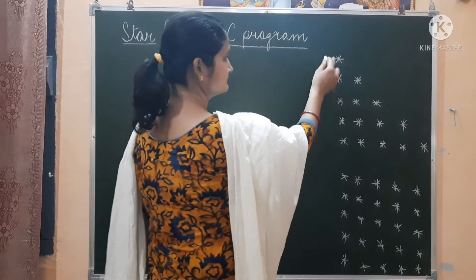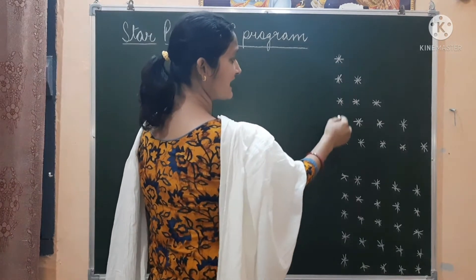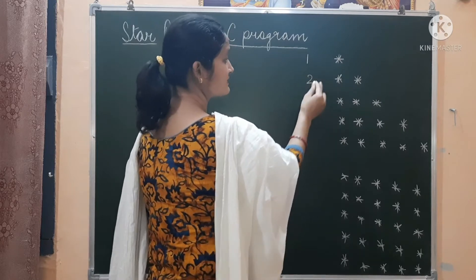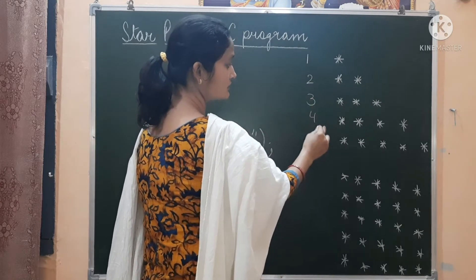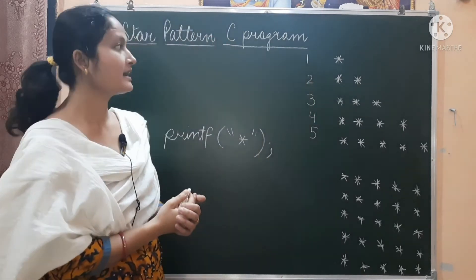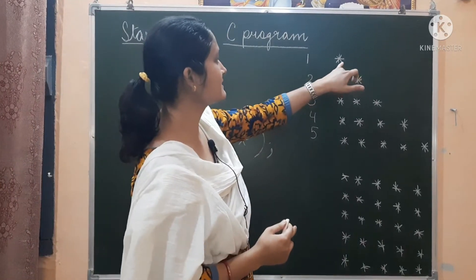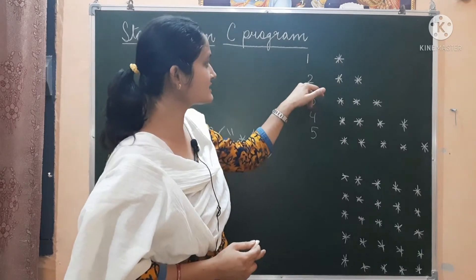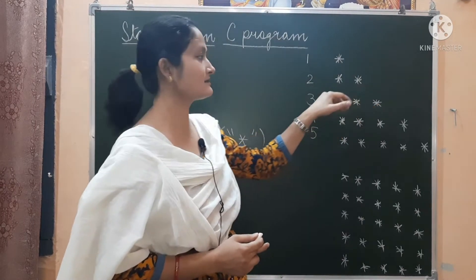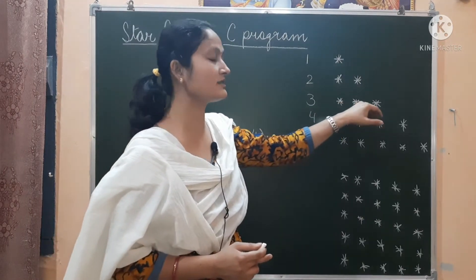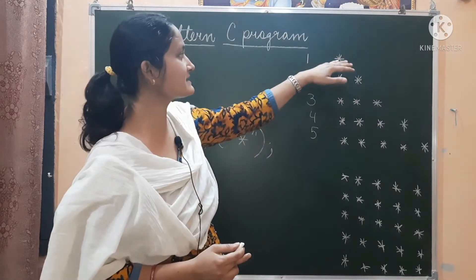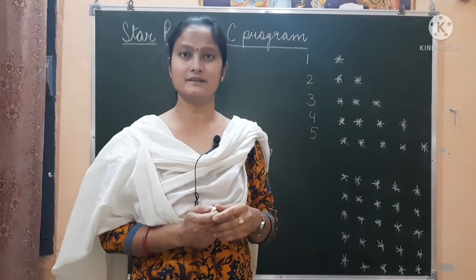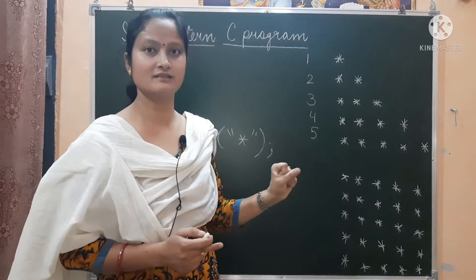Now let's see how many rows we have. We have the first row, second row, third row, fourth row, and fifth row. If you notice, the first row has only one star, the second row has two stars, the third row has three stars — meaning the number of stars printed equals the row number. So this is the logic.